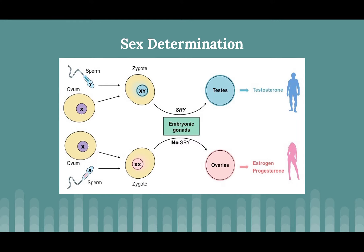Starting with sex determination in a human organism: the ovum in the woman provides the X chromosome for the zygote, and the sperm cell provides either an X or a Y chromosome. For a female presenting person, you have a double X chromosome, and here you have an XY chromosome. The XY chromosome causes the SRY gene. The SRY is the sex-determining region gene that encodes for the sex-determining region Y protein, which acts as a regulator by attaching to certain parts of the DNA.